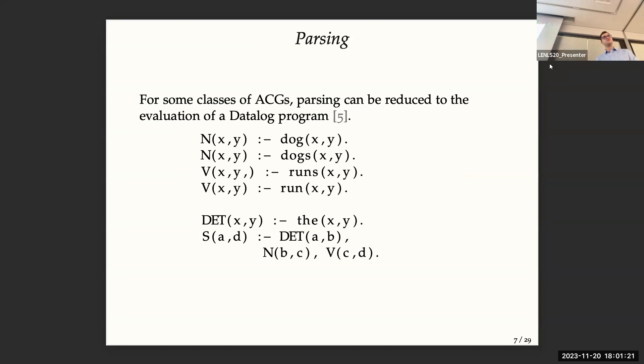For some cases of ACG, parsing can be reduced to the evaluation of a datalog program, and it's polynomial, which is a good property.